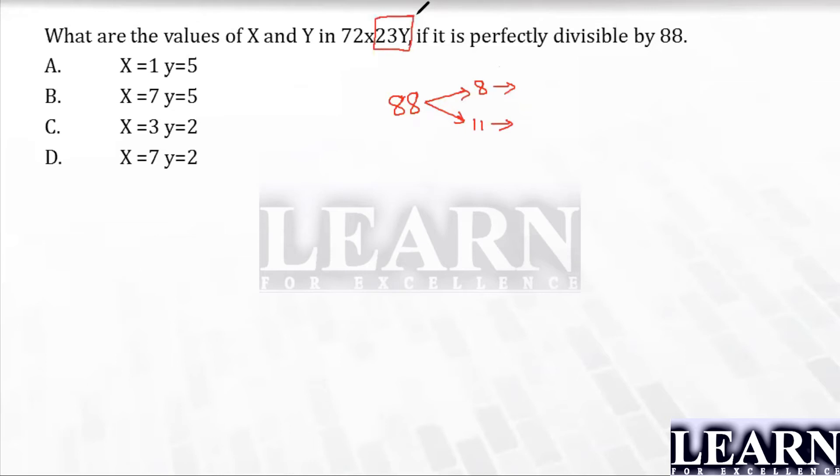Now what are the possibilities of y? Here in this question they have given 5 as well as 2. Will 5 be divisible by 8? No, 5 is an odd number. I can directly eliminate those two options. Y value is 2, we have got it. Now the answer is either this one or that one.